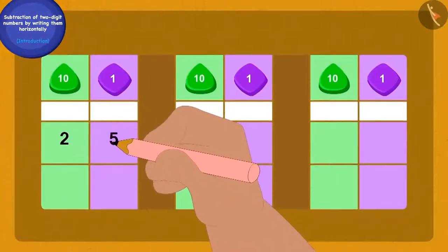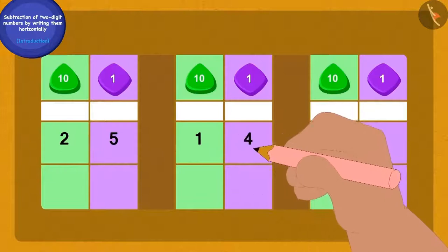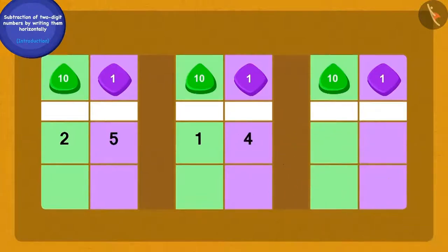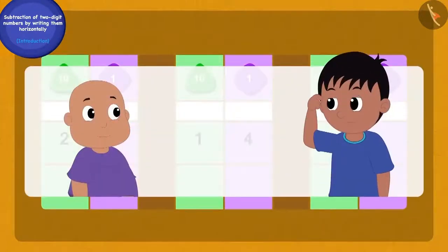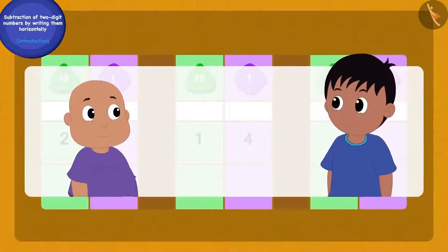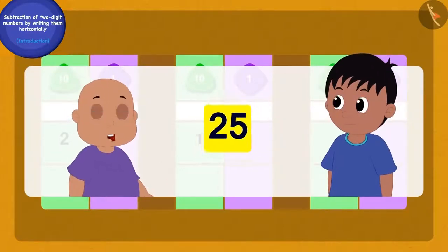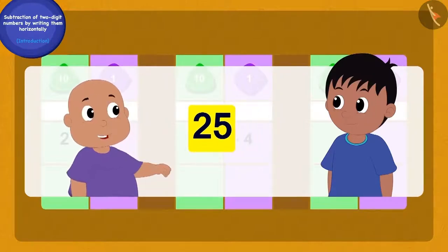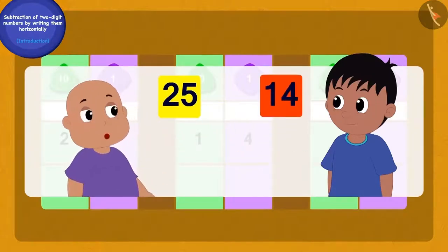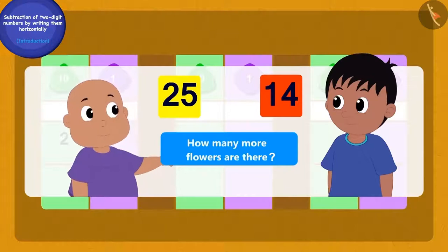Then Bablu wrote the question on a paper in this manner. Raju could not understand anything. Then Bablu told him, Raju, find out how many more flowers are there in Chanda's garland of 25 flowers than in her garland of 14 red flowers.